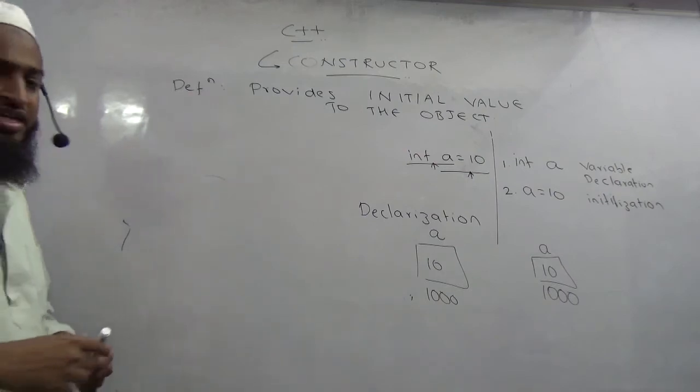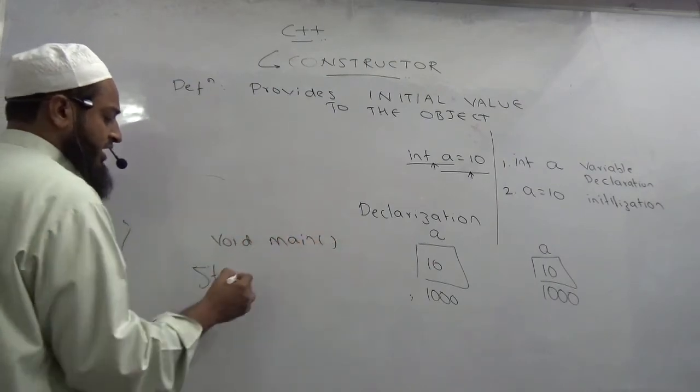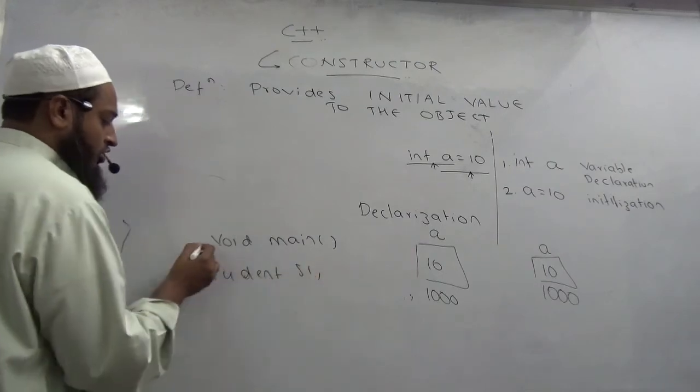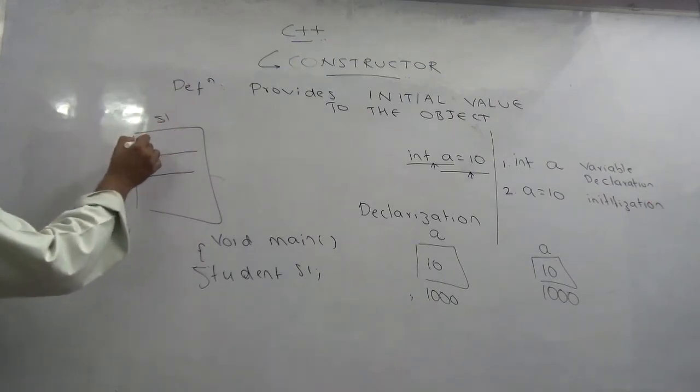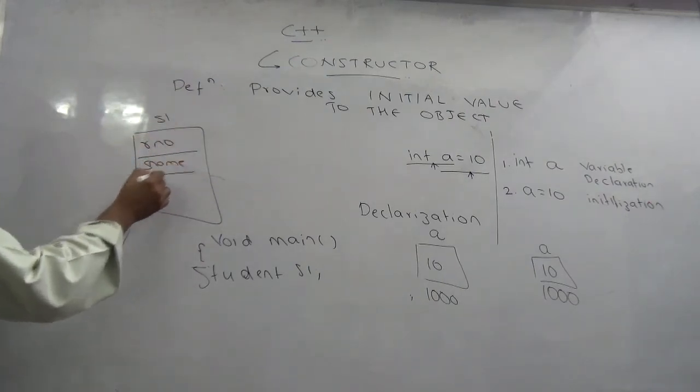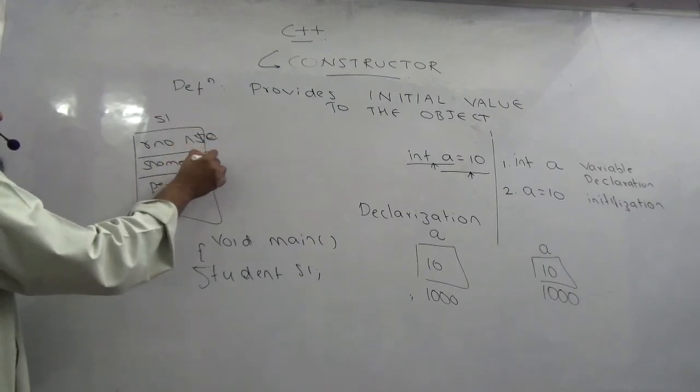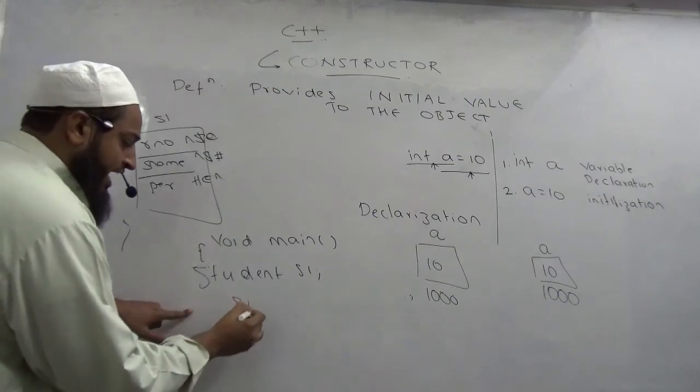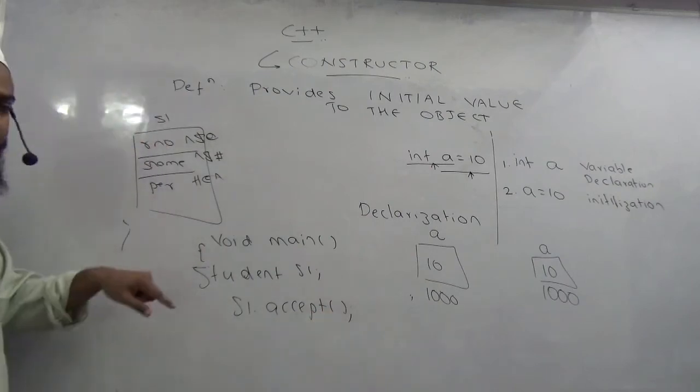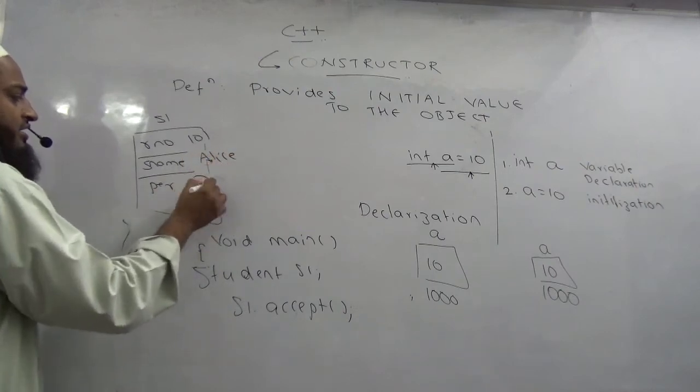So if you rewind back to the previous program, when we did student S1, if you go to void main in the previous program, when we said void main and we wrote student S1, what is there in S1 at the moment? You have S1 as the object of student, so should have roll number, should have S name, should have percentage. What is the value of roll number? You have garbage. All the values are garbage. Some trash values are there. And when I call S1.accept, it puts sensible value. It removes the garbage and puts the sensible value 101, Alice, and 78.5.